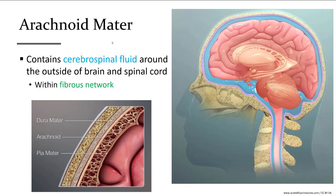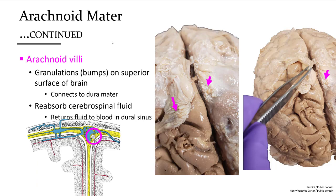The arachnoid mater's scaffolding structure is conducive to allowing the watery cerebrospinal fluid to flow through. Inside the brain, the choroid plexus makes cerebrospinal fluid. The arachnoid villi are bumps on the arachnoid mater found in thicker clusters near the top of the brain, and they reabsorb the cerebrospinal fluid and return it to the venous circulation.